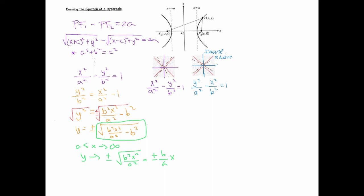The asymptotes are y = ±(b/a)x for the horizontal hyperbola. Applying the same reasoning to the vertical form (y → ∞), you get the corresponding asymptote equations for that orientation as well. The next slide summarizes the relationship between a, b, and the asymptotes.